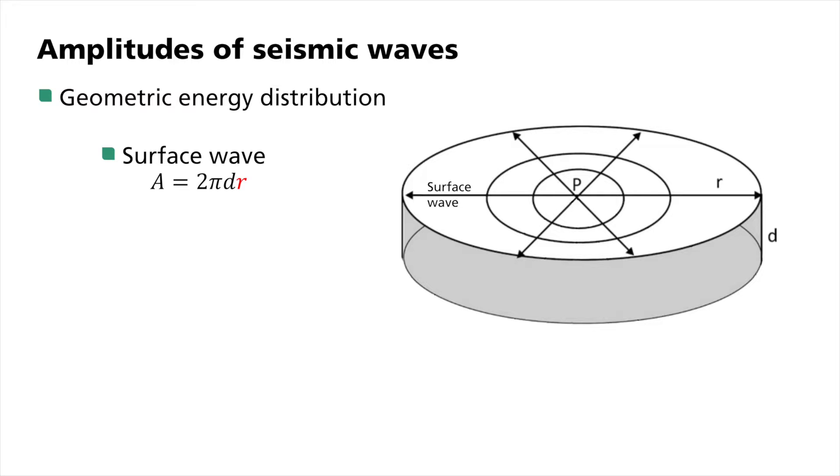Body waves, on the other hand, spread out in three dimensions. Hence, their energy is distributed over the surface of a sphere of the size 2πr². Which means the amplitude decreases proportionally to the square of the distance, making it lower at greater distances than it is the case for surface waves.